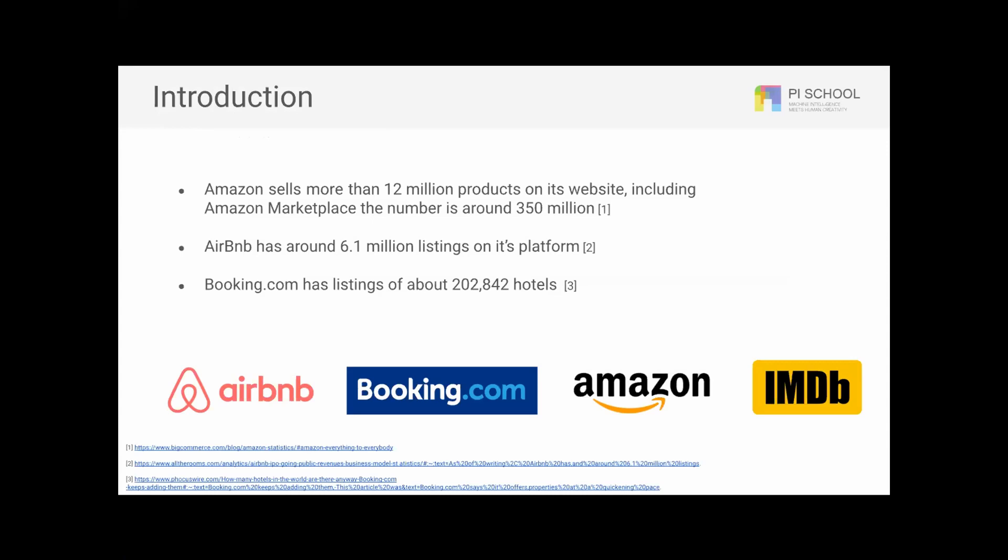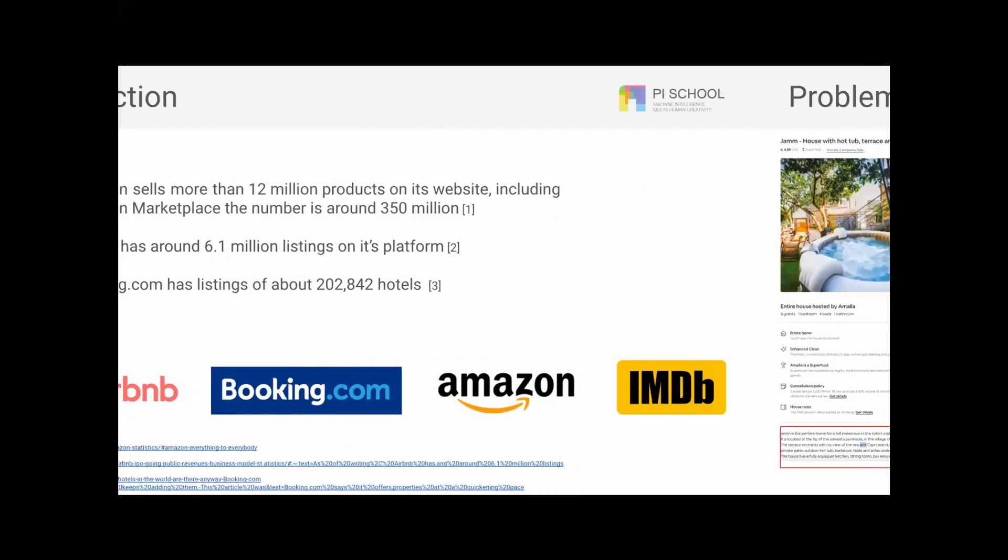Airbnb has around 6.1 million listings on its platform. Booking.com has been listing more than 200,000 hotels on their platform, and I'm sure there are a lot of reviews on IMDB as well. To have a very good user experience, it's really important to have properly cased descriptions or text on the website.